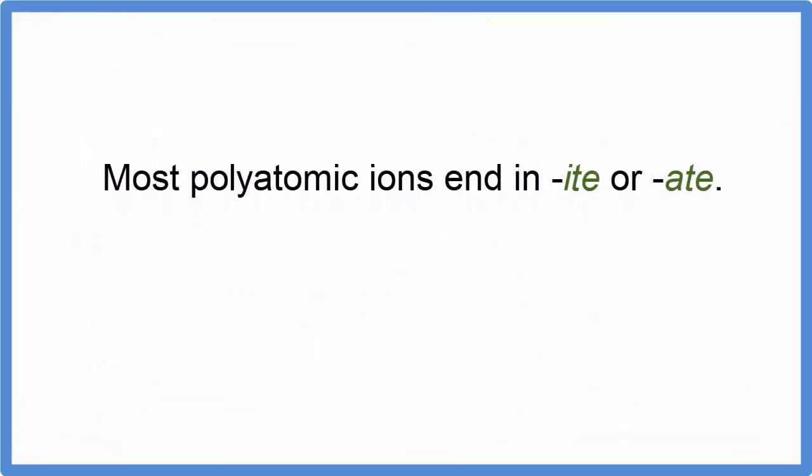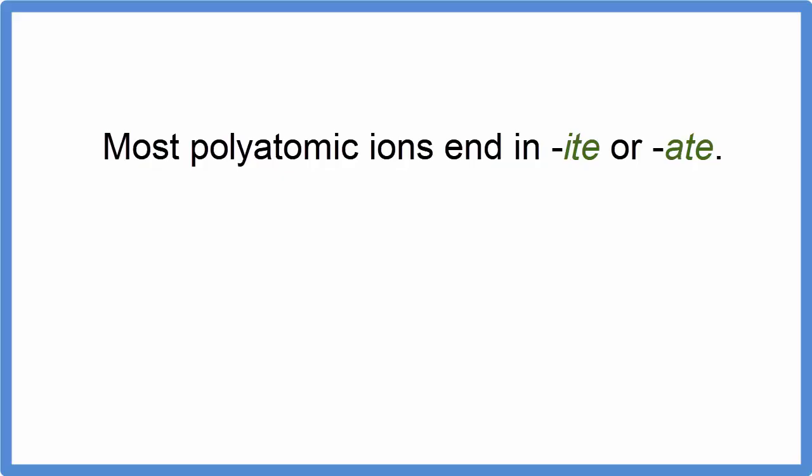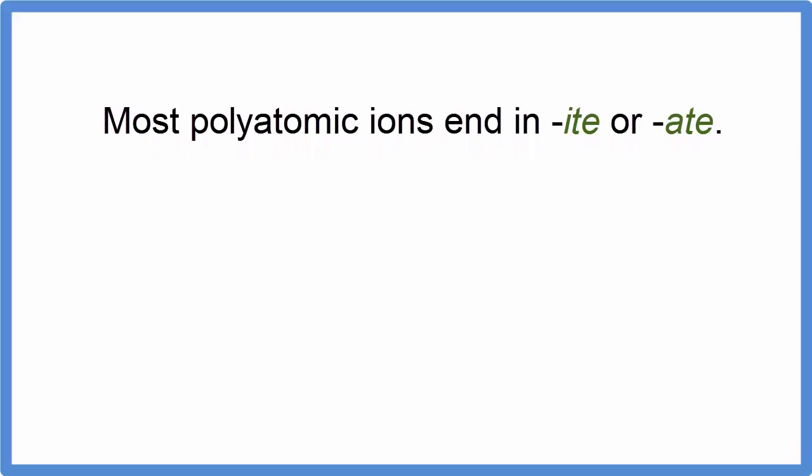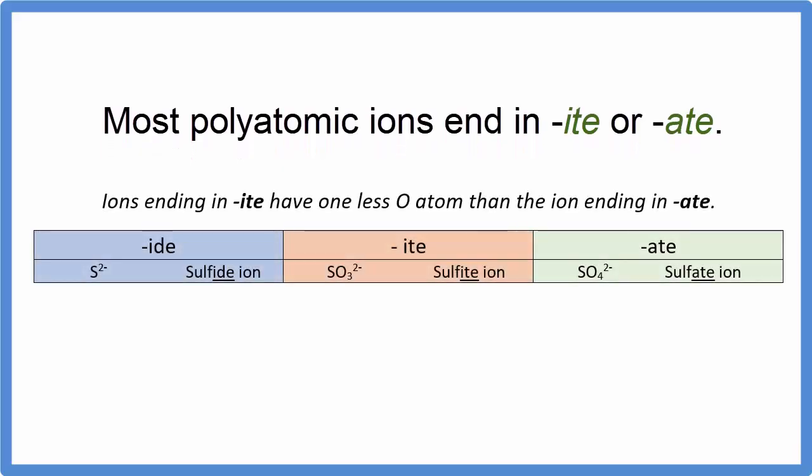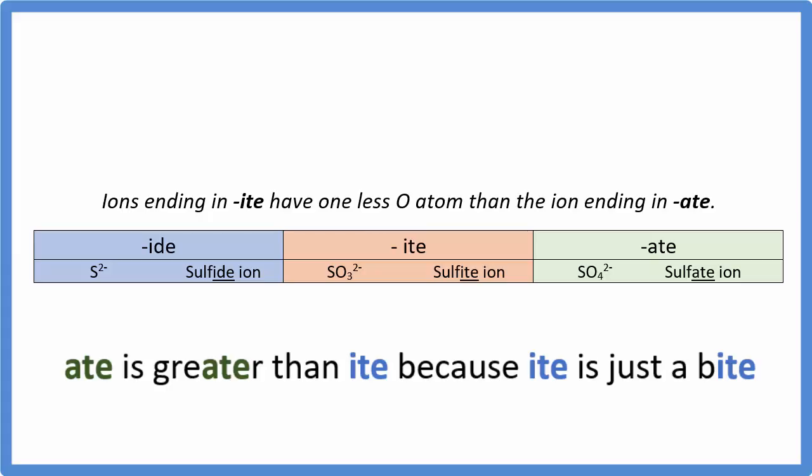Most polyatomic ions end in ITE or ATE. And here's the rule: ions ending in ITE have one less oxygen than the ions that end in ATE. So if we look at the chart here, if we have sulfite SO3 2-, that means sulfate is going to be SO4 2-, it has one more oxygen. An easy way to remember this is that ATE is greater because ITE is just a byte.